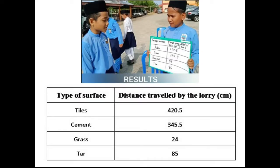From the result, we can observe that the distance traveled by the lorry on the tile surface is the furthest, while the distance traveled by the lorry on the grass surface is the shortest.